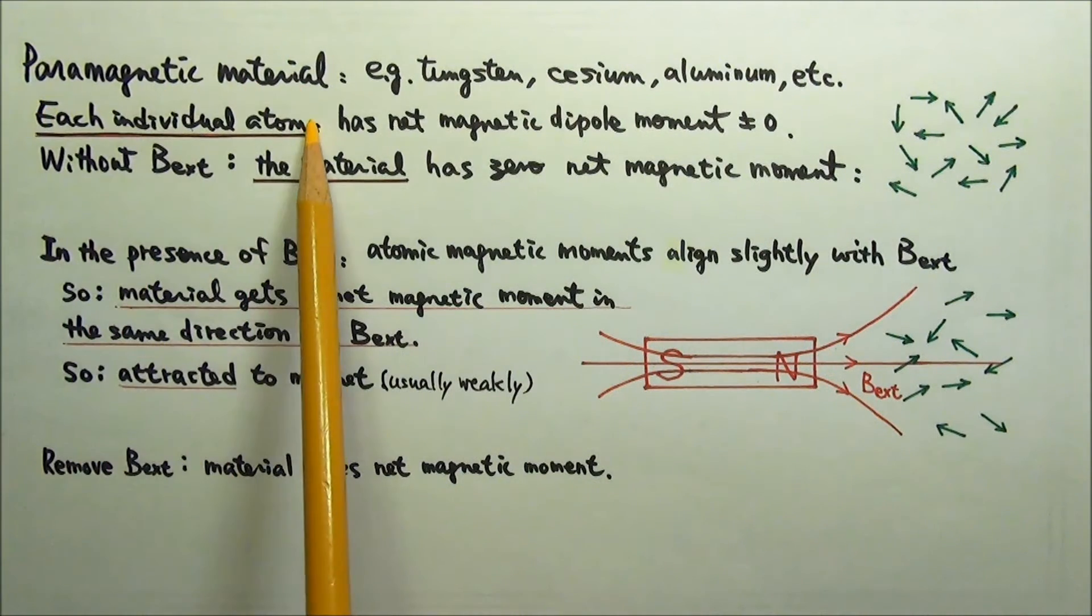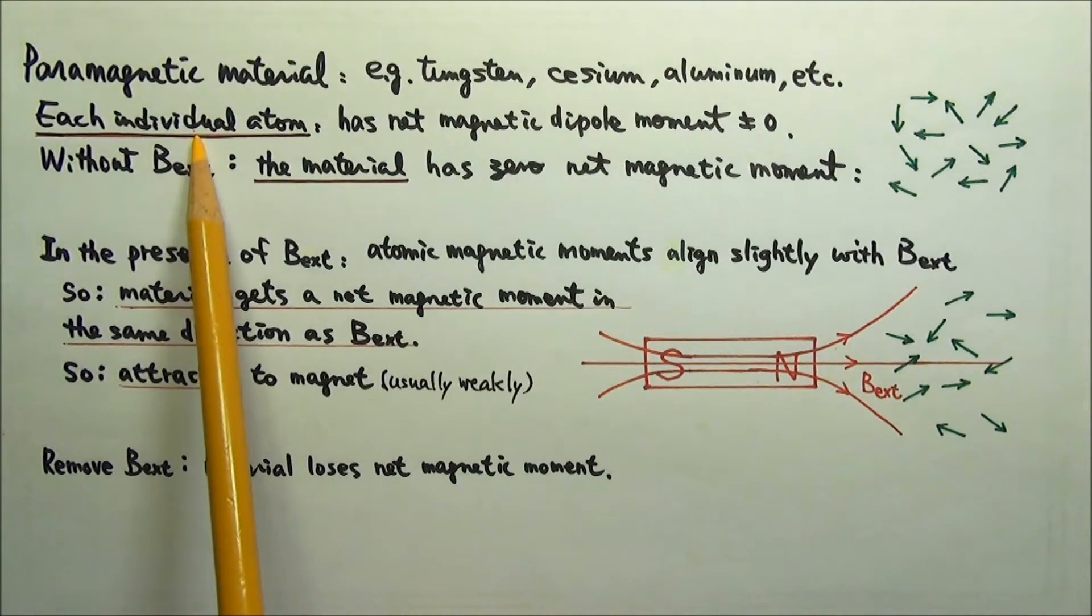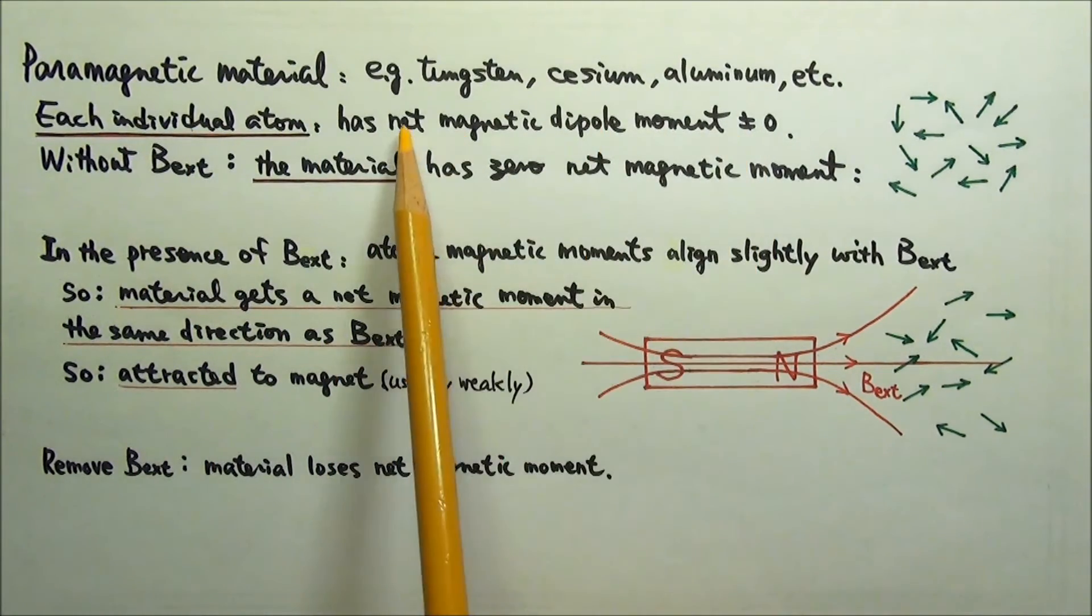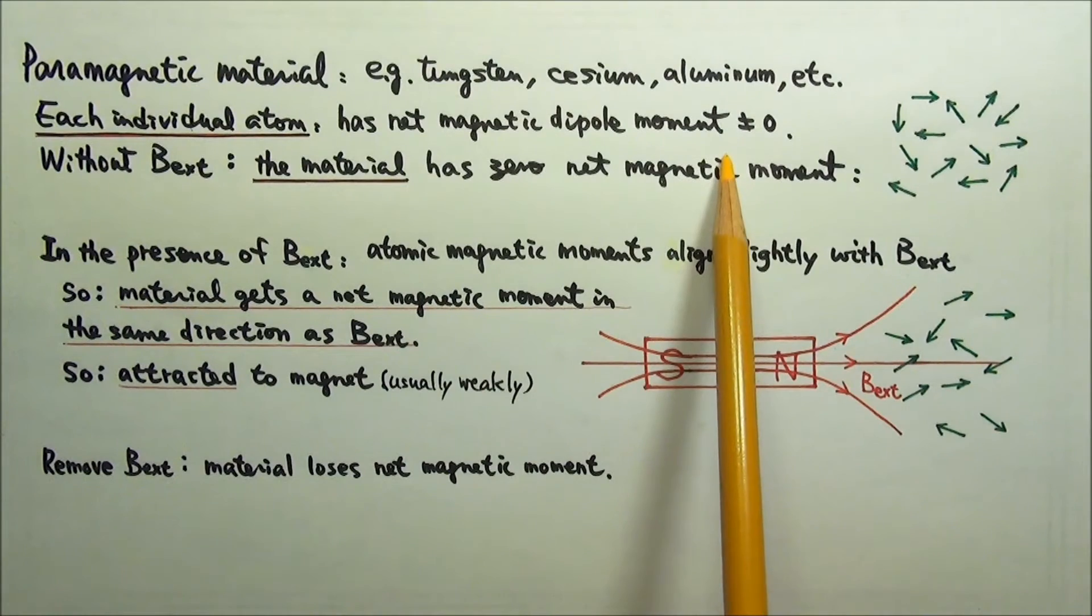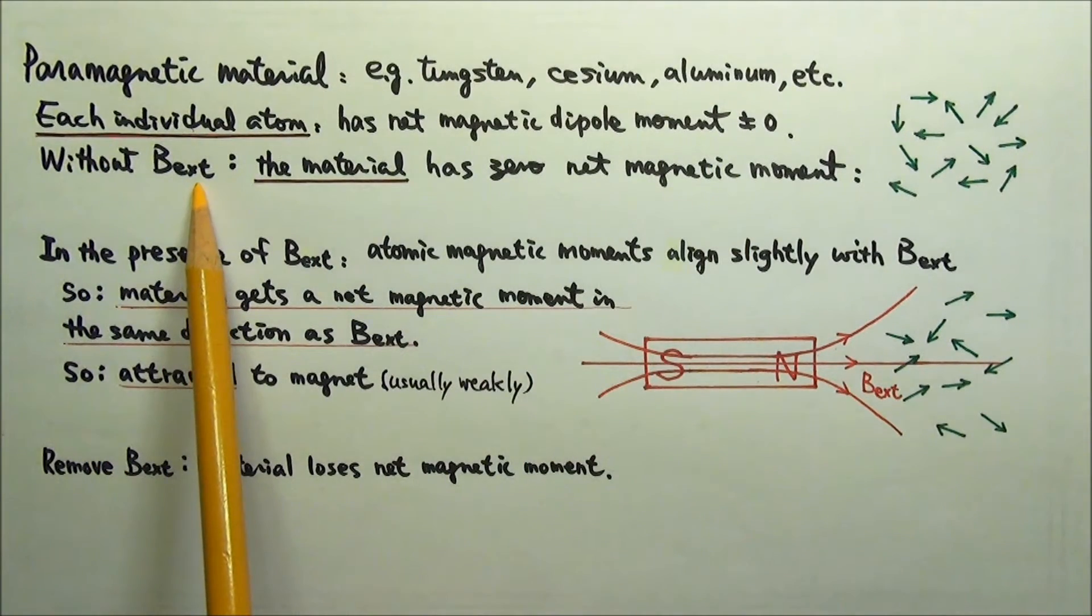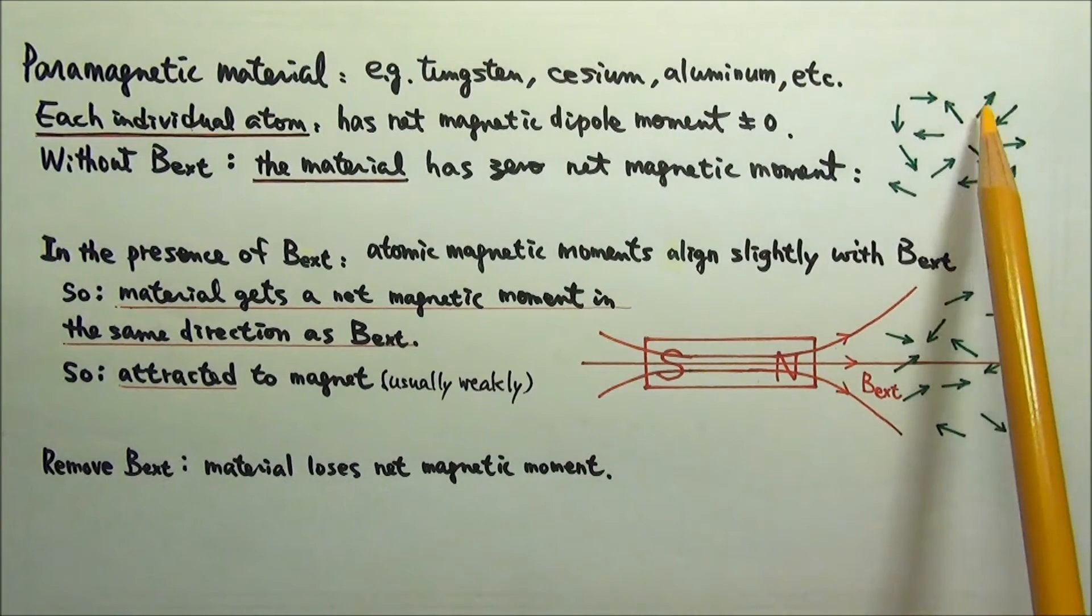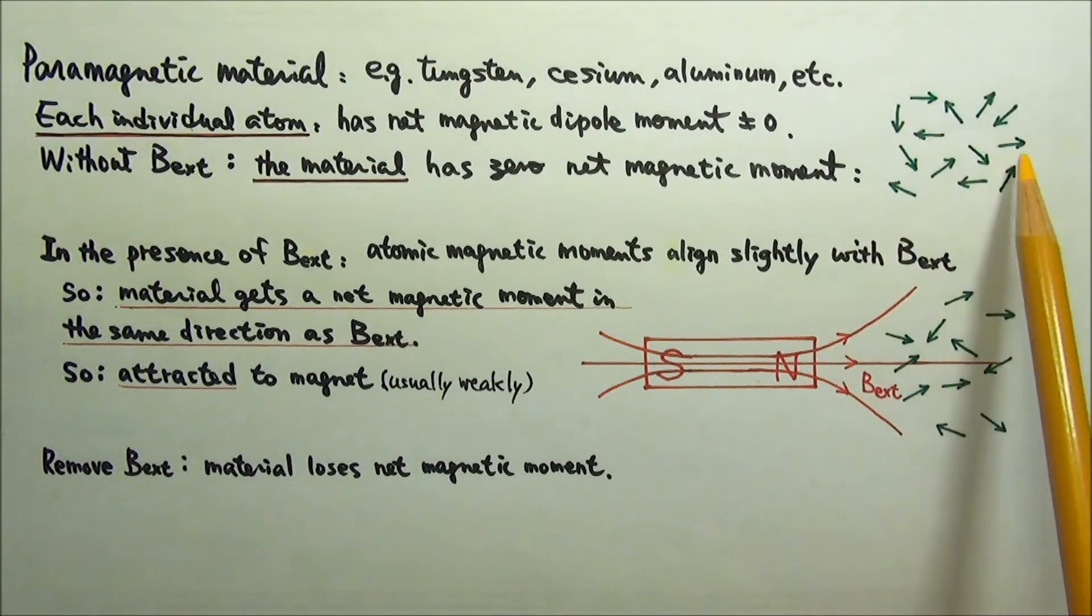In a paramagnetic material, each individual atom has a non-zero net magnetic dipole moment. However, without an external magnetic field, these atomic dipole moments are randomly oriented.